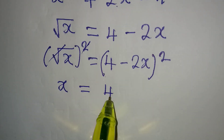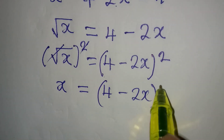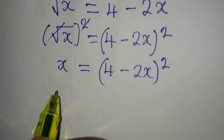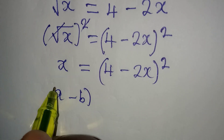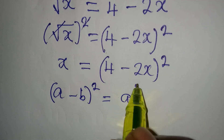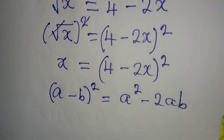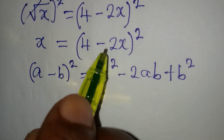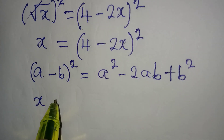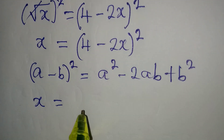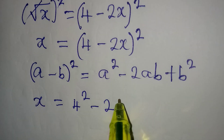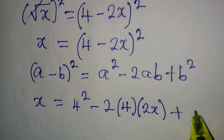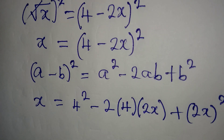From squaring, we have x equal to 4 minus 2x squared. Now, do you know this standard: if you have (a minus b) squared, it is the same thing as a squared minus 2ab plus b squared? We are going to apply this to the right hand side, so we have x equal to a squared, which is 4 squared, minus 2 times 4 times 2x, plus 2x squared.